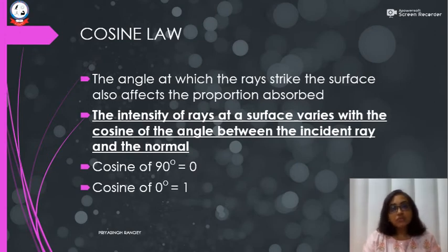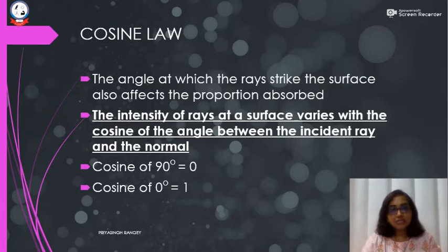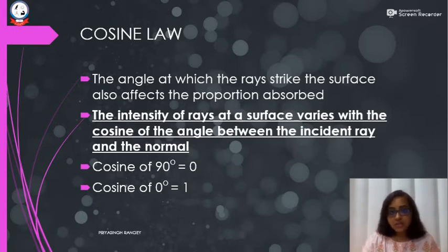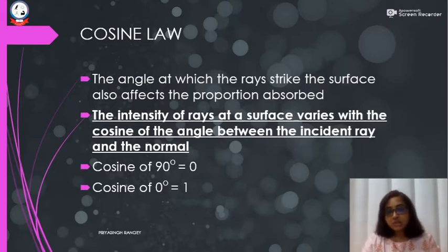The next law is the cosine law. The cosine law states that the intensity of rays at a surface varies with the cosine of the angle between the incident ray and the normal. We are talking about the angle at which the electromagnetic waves are going to strike the surface. Based on this angle of incidence — as discussed with Grotus's law — it is also going to affect the proportion of waves being absorbed and therefore the intensity.